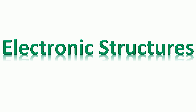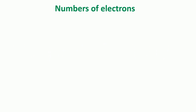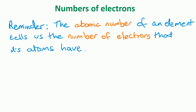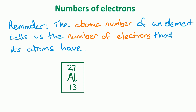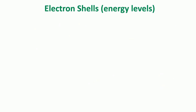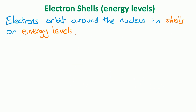First of all, we need to remember how to work out the number of electrons for different atoms. Remember, it's the atomic number of an element that tells us the number of electrons that its atoms have. So in the case of aluminium, the bottom number is the atomic number, and that's 13, so aluminium atoms have 13 electrons.